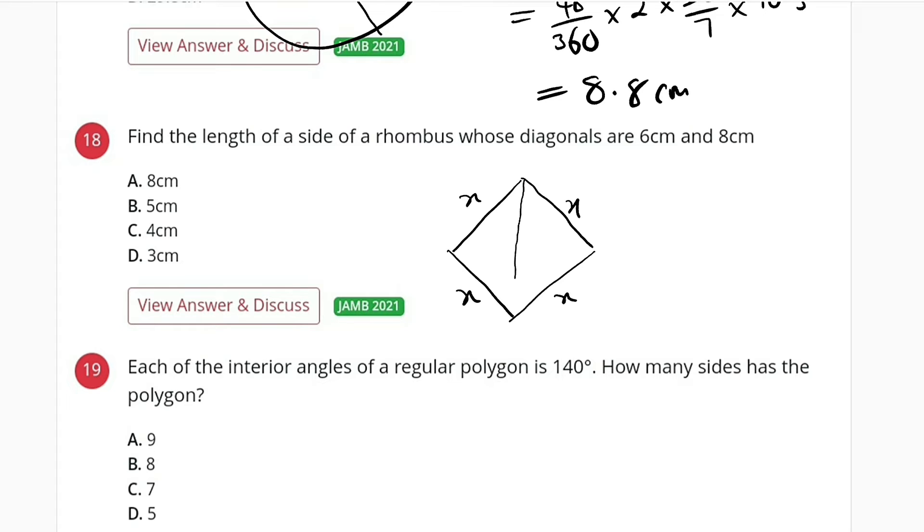So this is the diagonals. If the longest diagonal is 8, so this will be 4 and this will be 4, making 8. And if this is 6, we have 3, 3 because they are equal.